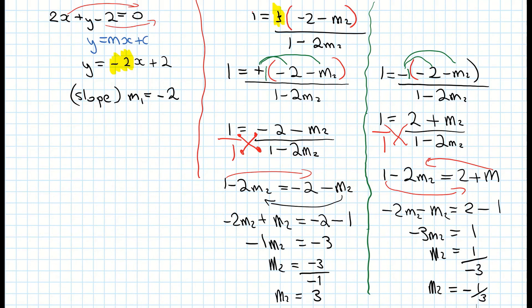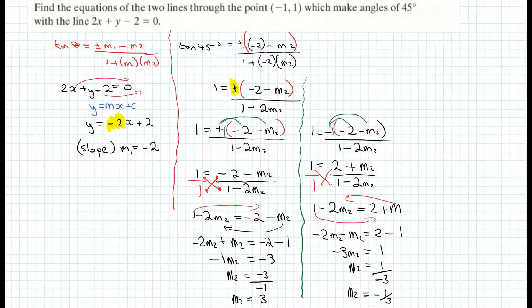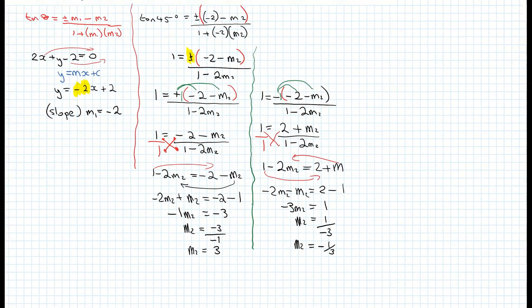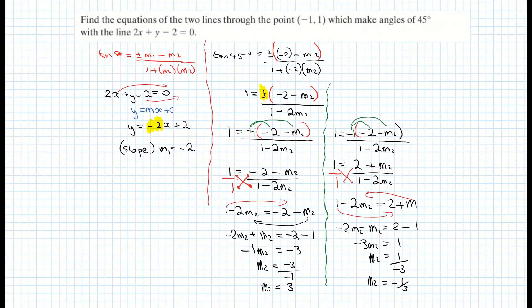You can see that slopes 3 and minus one third are perpendicular to each other. Scrolling back to the question, we need to find the equations of two lines through the point (minus 1, 1). So now I have the two slopes and I'll substitute them into the equation of the line formula using that point.